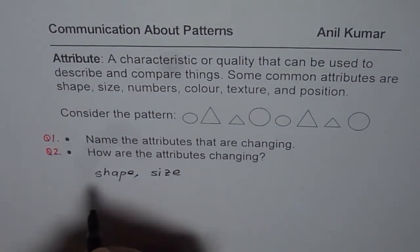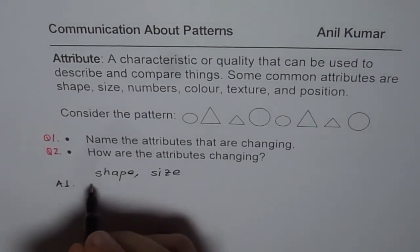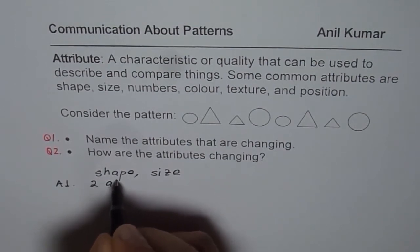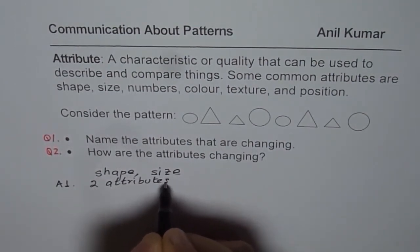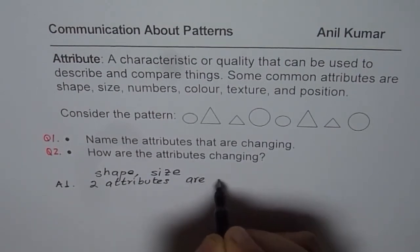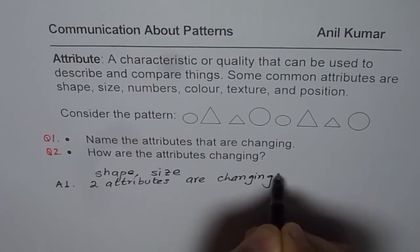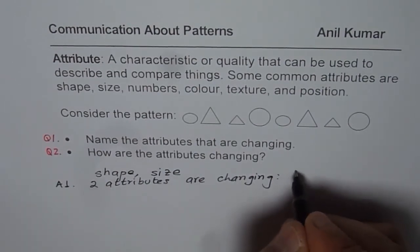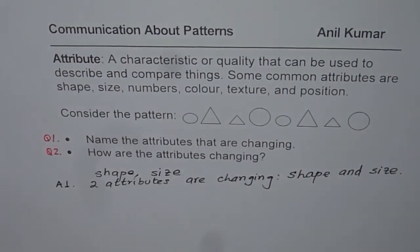So we can answer question number one and our answer is, let me write down. We say two attributes are changing. And what are these attributes? These are shape and size. So these are the two attributes which are changing.